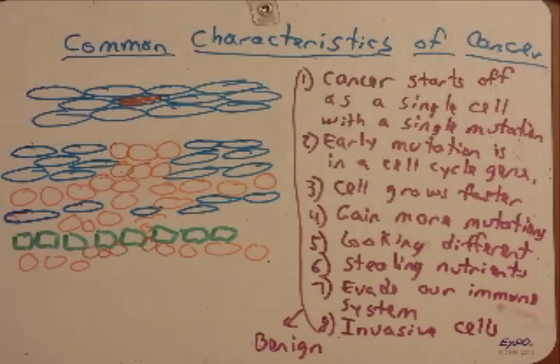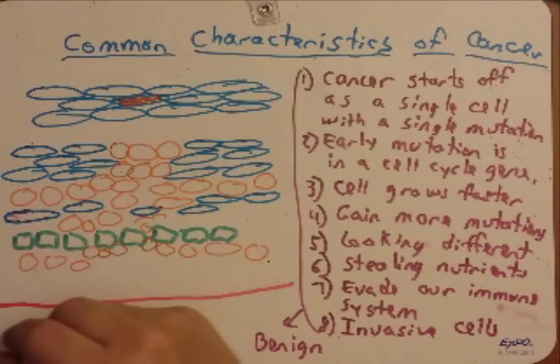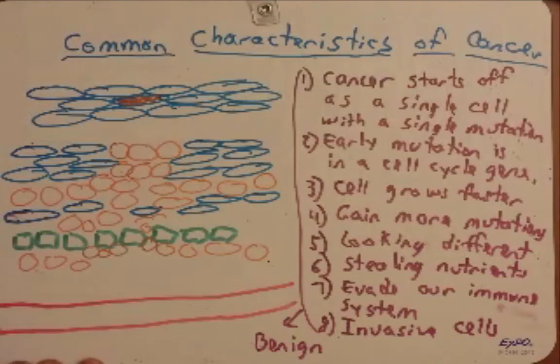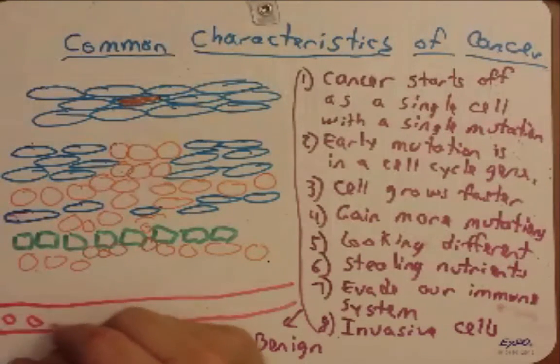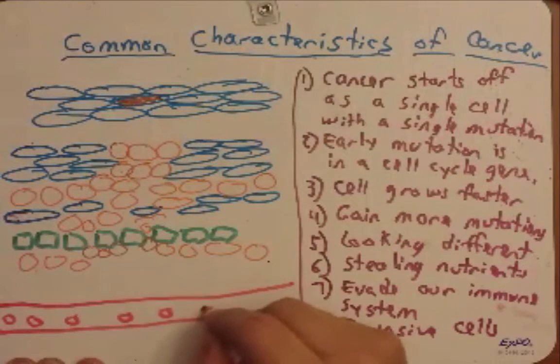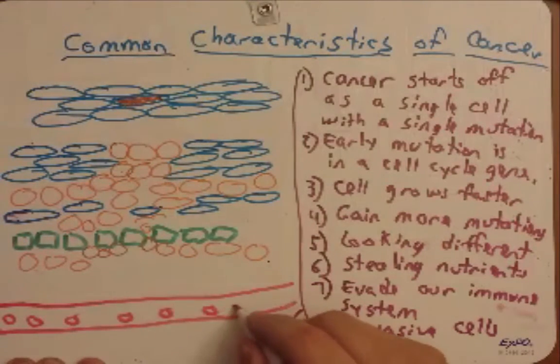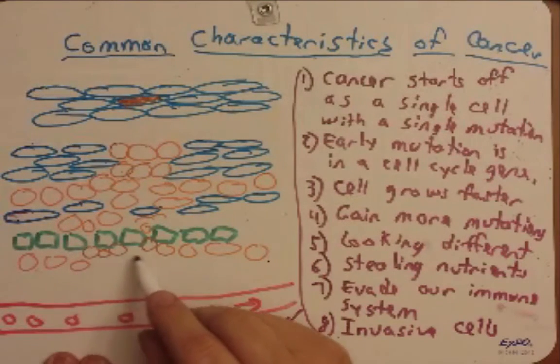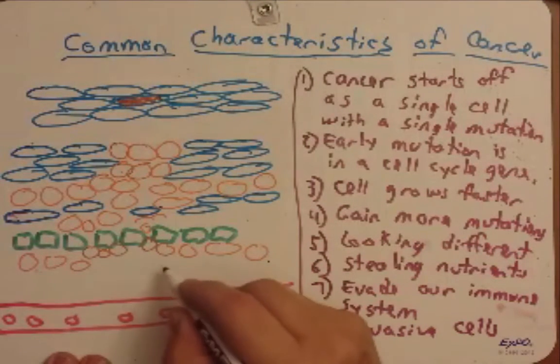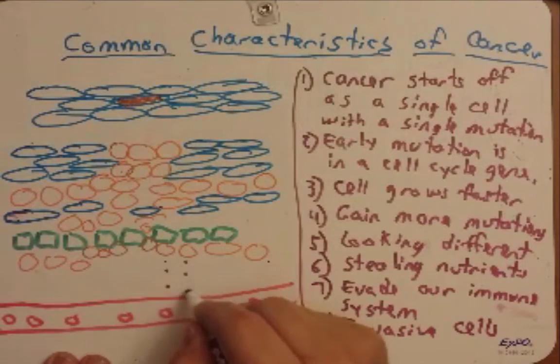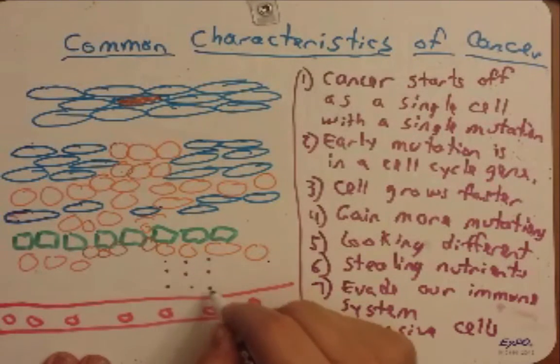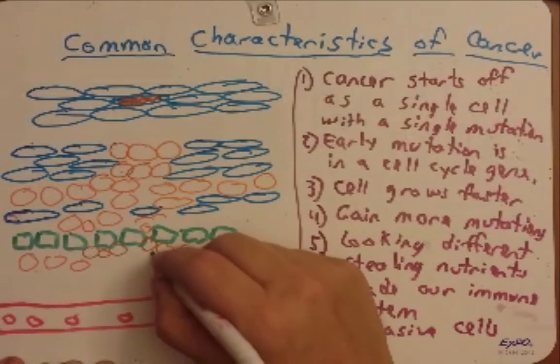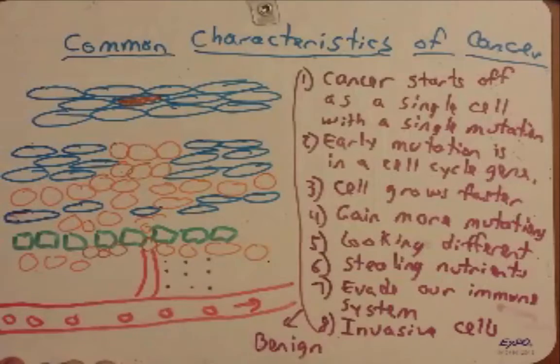Now, cancers do something very clever, and they will start to recruit a blood vessel towards it. This blood vessel is carrying along red blood cells, white blood cells down a certain path. These rapidly growing cancer cells will begin to release certain chemicals that signal the blood vessels to start growing towards the tumor cells.